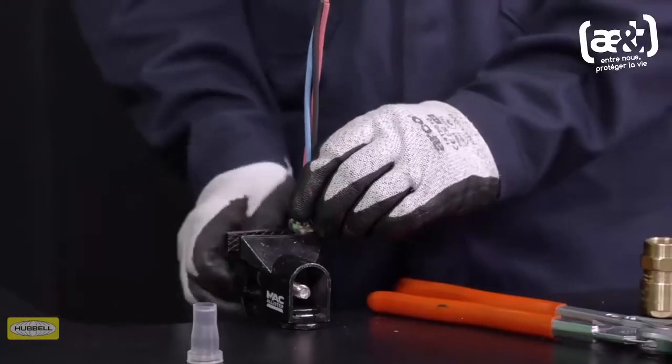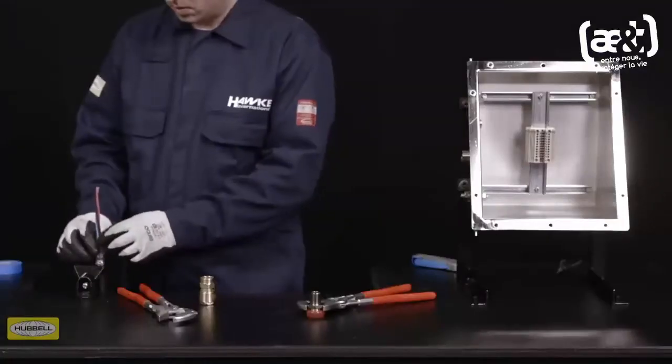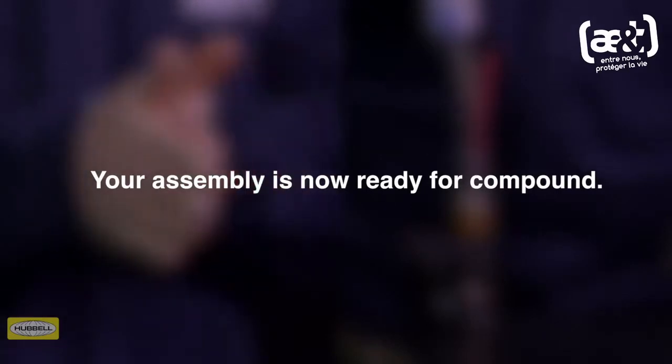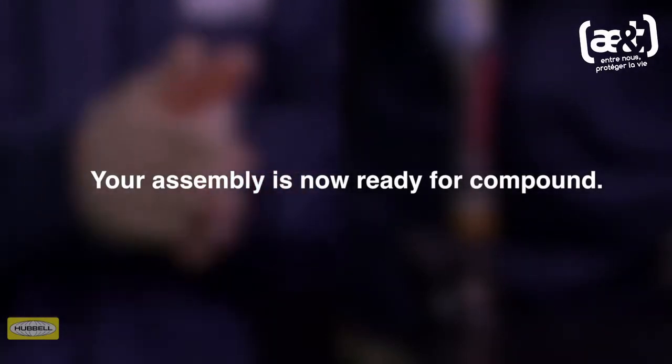Check that the resin barrier is sealing on the taped cores and fit the pot. Your assembly is now ready for compound. Follow our HAWC seal compound or Express Resin installation videos for step-by-step instructions.